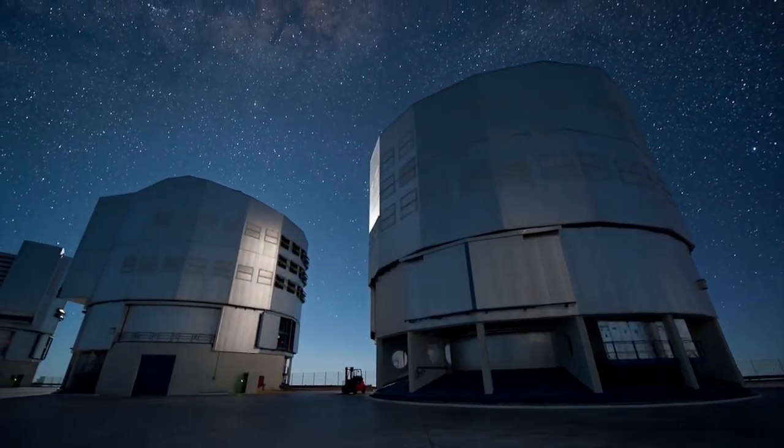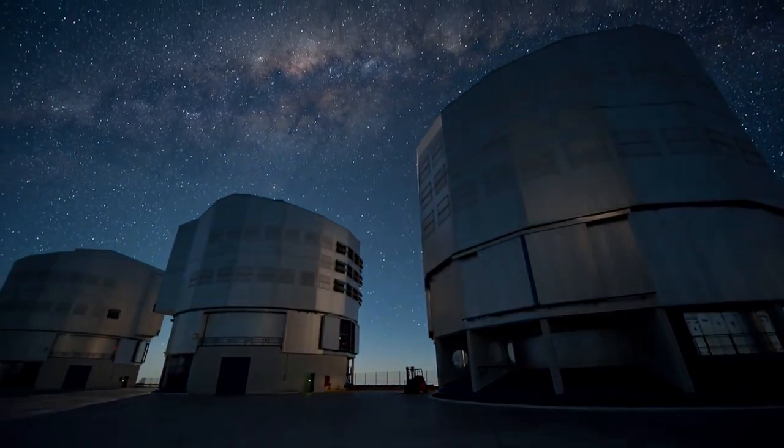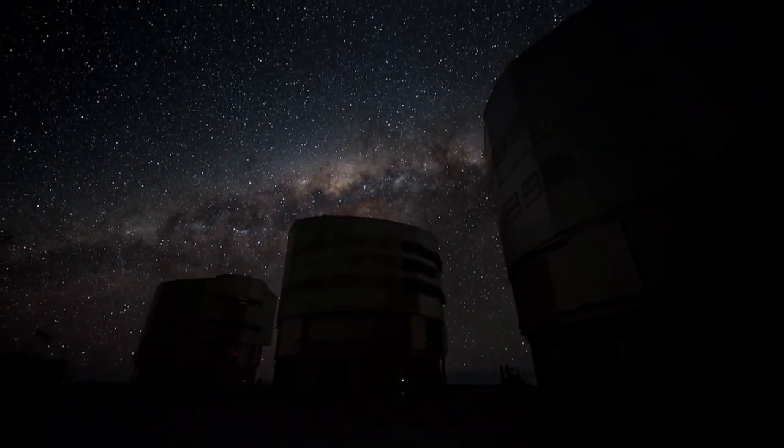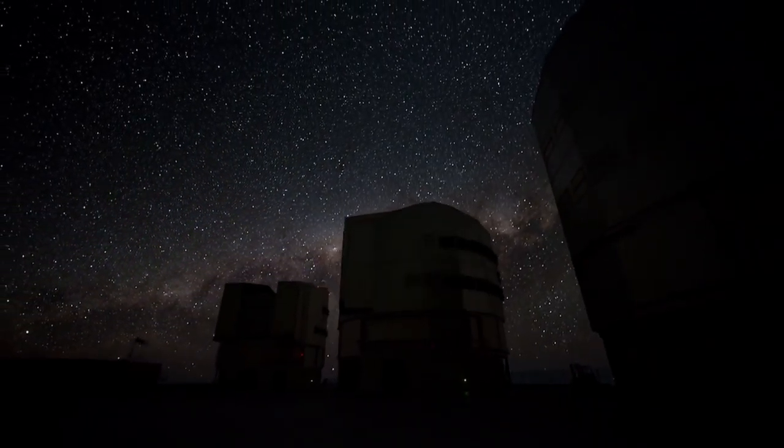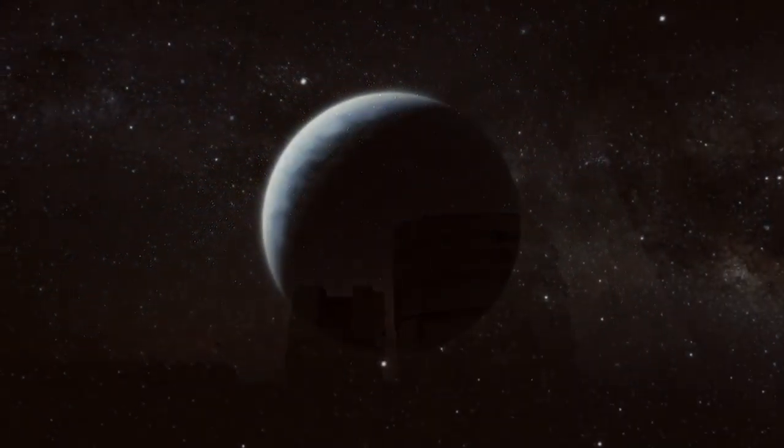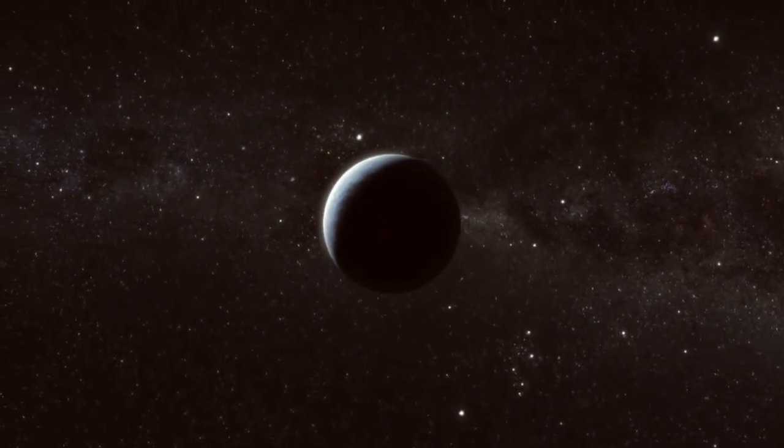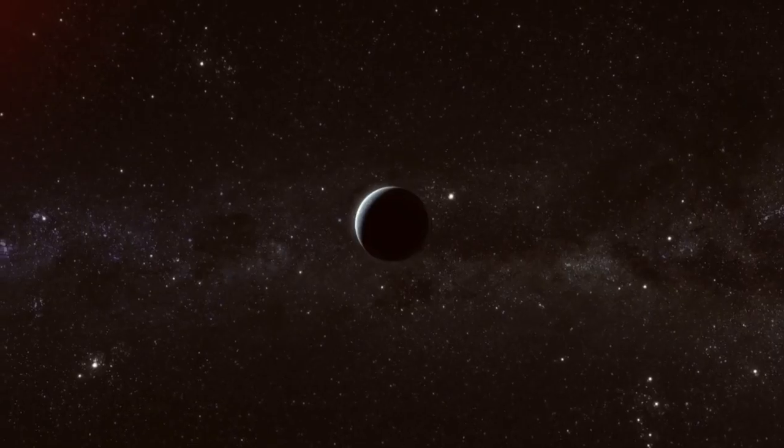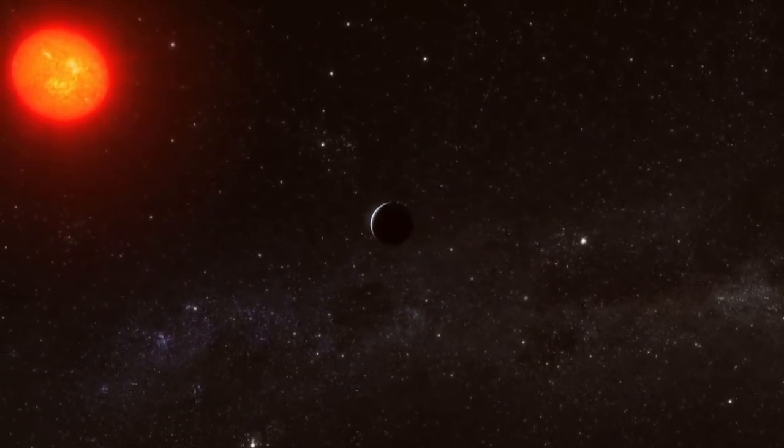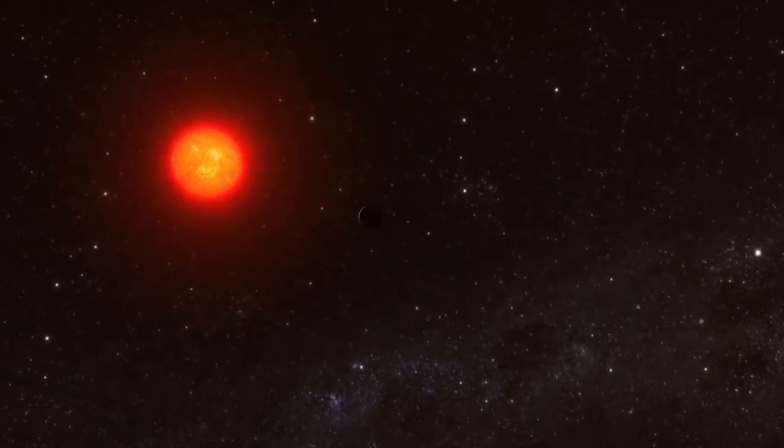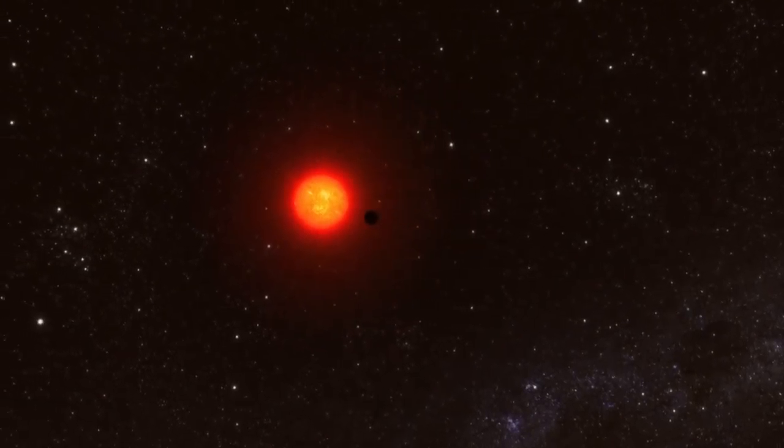The atmosphere around a super-Earth exoplanet was analyzed for the first time by astronomers using the Very Large Telescope. The planet, which is known as GJ 1214b, was studied as it passed in front of its parent star, and starlight passed through the planet's atmosphere.